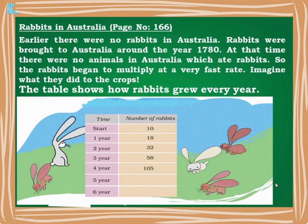Rabbits in Australia, Page 166. Earlier there were no rabbits in Australia. Rabbits were brought to Australia around the year 1780. At that time there were no animals in Australia that ate rabbits, so the rabbits began to multiply at a very fast rate. Imagine what they did to the crops — rabbits eat carrots, radishes, and all such crops, spoiling them.